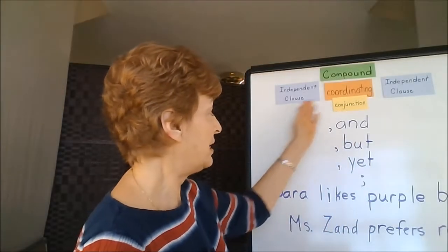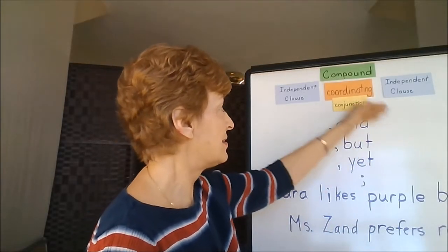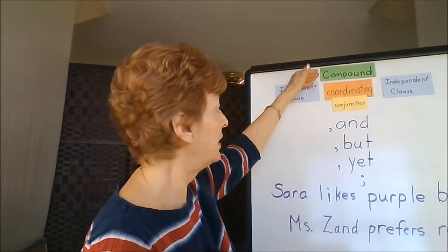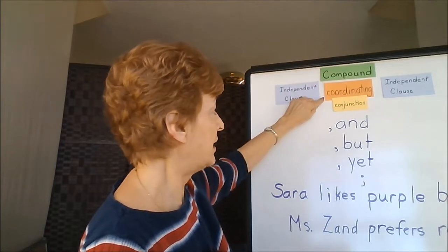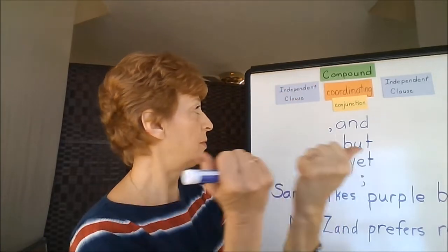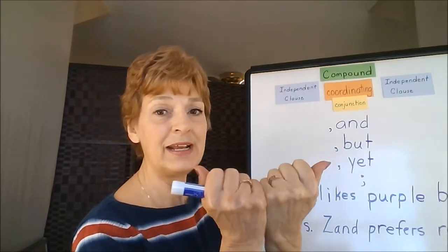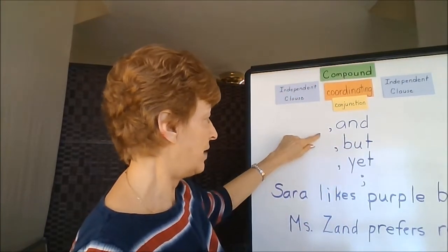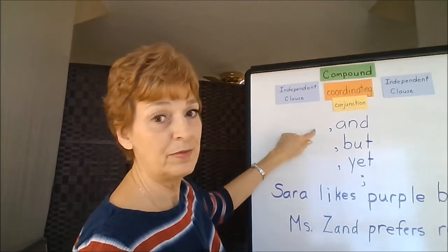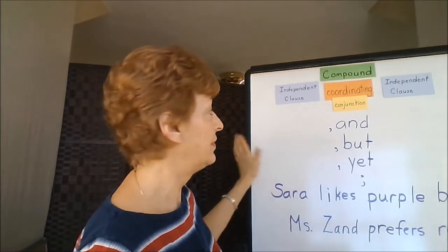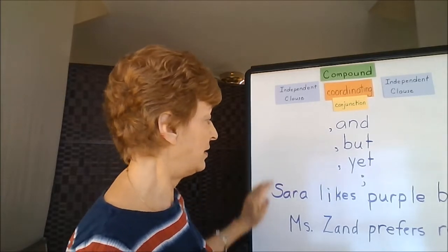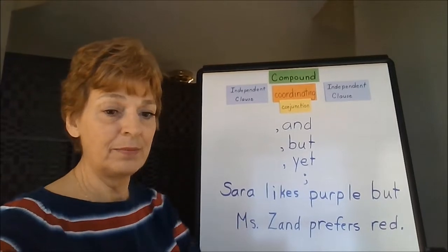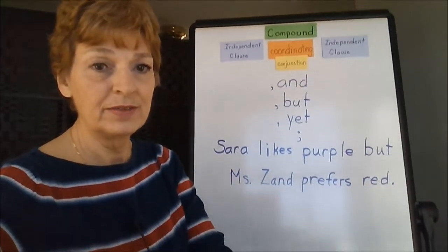We have our two independent clauses for our compound structure. They're joined with a coordinating conjunction. I've listed a few of them here, and we're going to do an example of a compound structure.